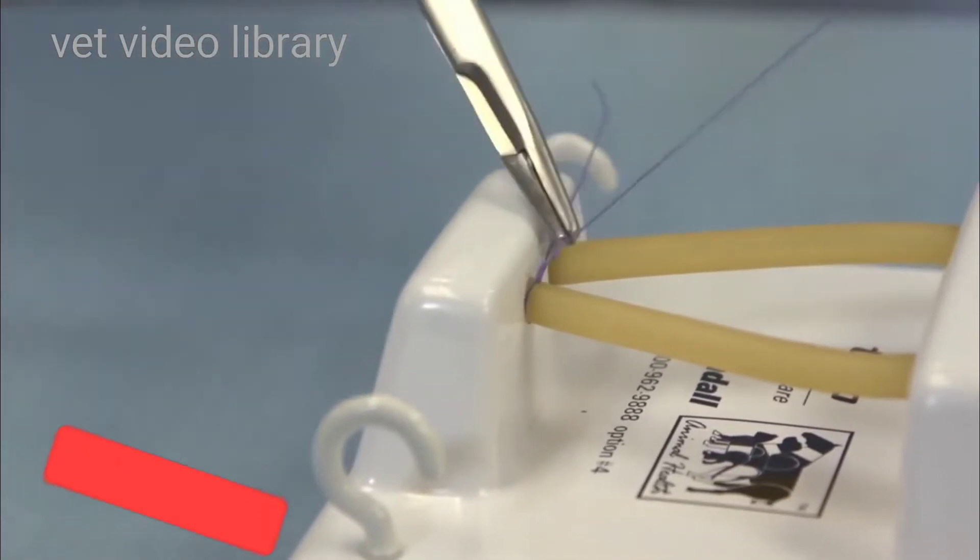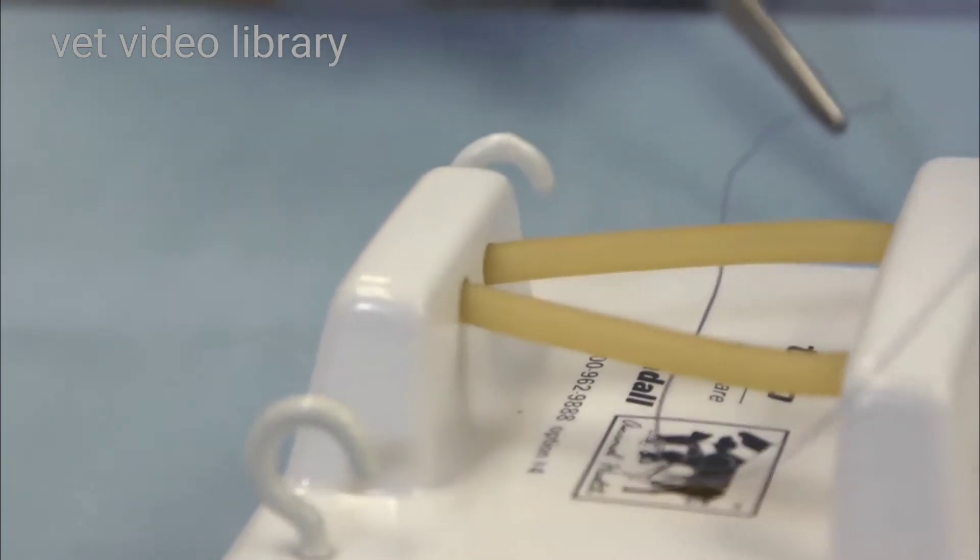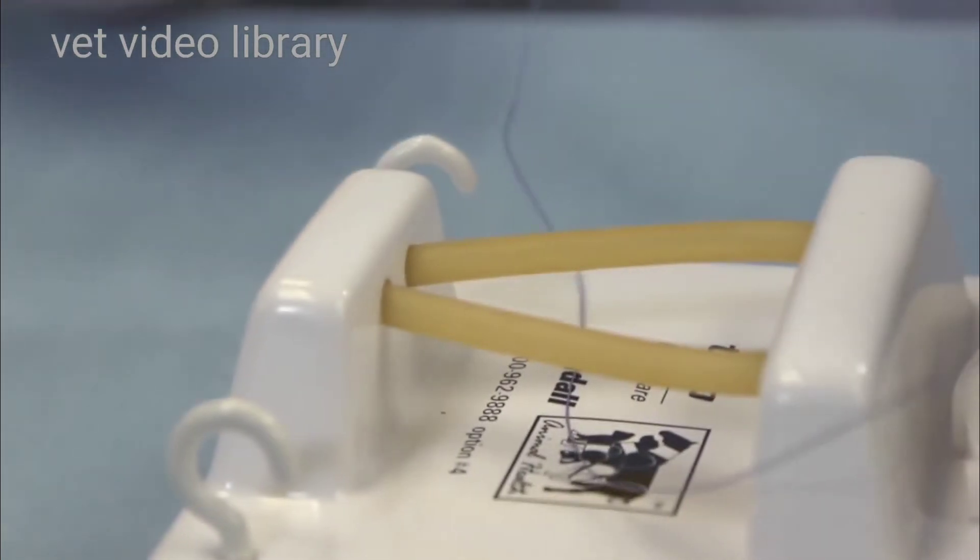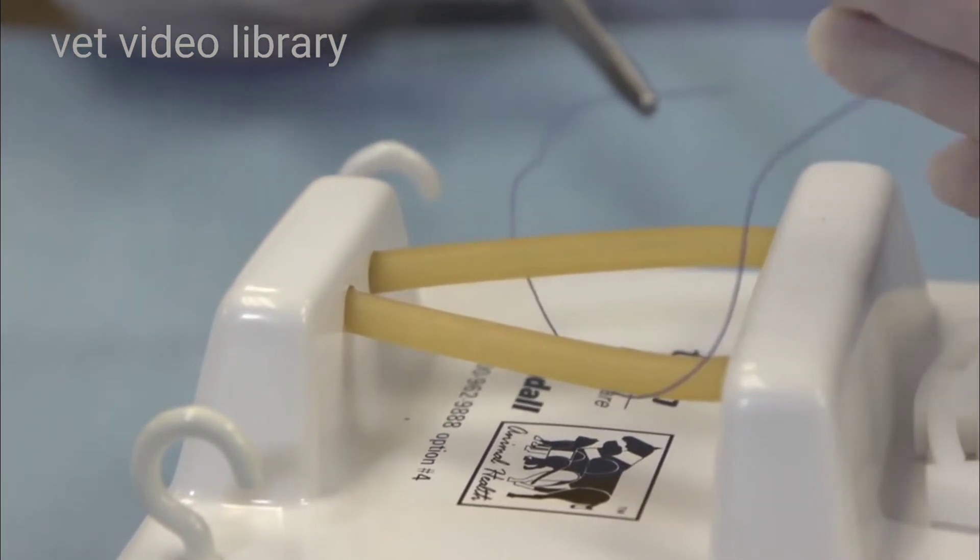So we're going to use a Miller's knot. With a Miller's knot, you pass your suture across the tissue like we have here.